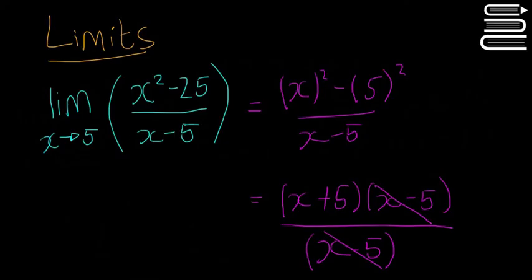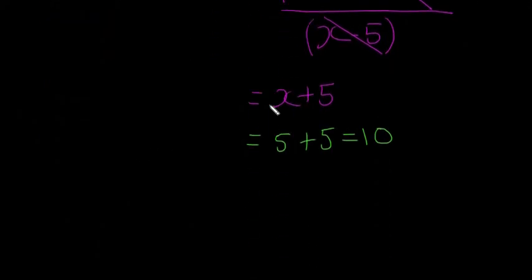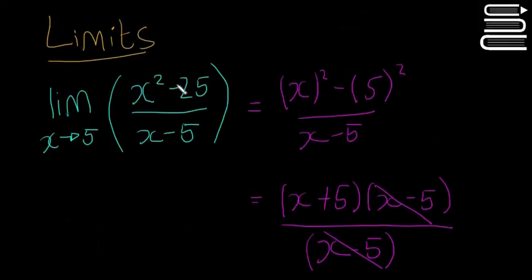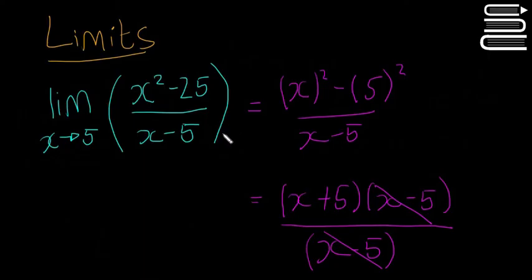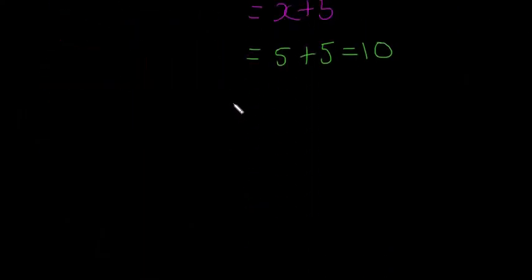One last point I'll make before I end the video is that you actually can get 0 as an answer. 0 divided by 0 you can't get as an answer, which is what we got when we subbed 5 straight in here. But you can get 0 as an answer because 0 is a number.